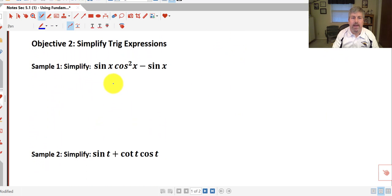So let's go ahead and start by simplifying our first trig expression here. We have sine of x times cosine squared x minus sine of x. We can simplify this by factoring out sine of x. So if we factor out sine of x, we get cosine squared x minus 1.